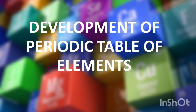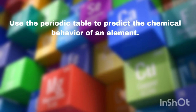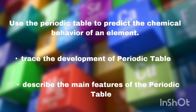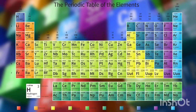On this video lesson, we will talk about the development of the periodic table of elements. Specifically, we will use the periodic table to predict the chemical behavior of an element, trace the development of the periodic table, and describe the main features of the periodic table. The study of each element is not a simple job. However, scientists thought of a way to make it easier.